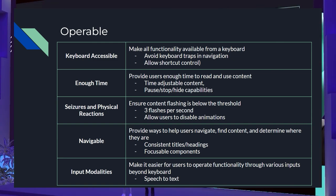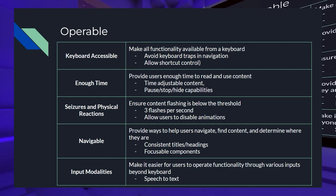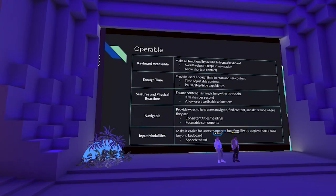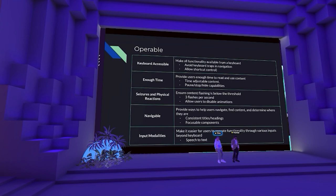Provide as many ways to help your user as possible — breadcrumbs, consistent titles and headings, focusable components. For example, when a user hovers over a button, you can have a visual display of focus by outlining or highlighting it. Making it clear what the user is doing and what's expected next is key. Input modalities: make your product operable for folks who use screen readers, speech to text — if a user needs to fill out a form and doesn't type, make the product compatible with speech to text.